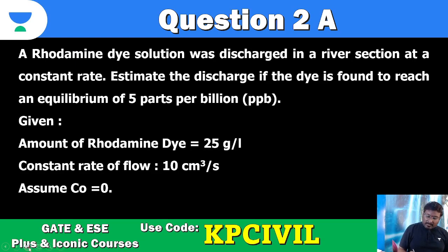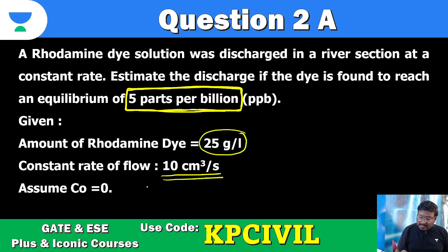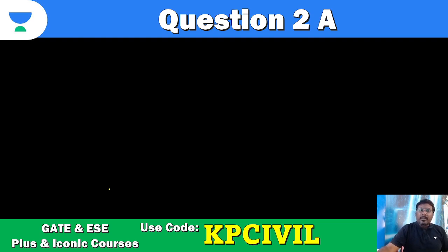Now coming to the question. A rhodamine dye solution is discharged in a river at a constant rate. Estimate the discharge if the dye is found to reach an equilibrium of 5 ppb. Amount of rhodamine dye 25 gram per liter, constant flow rate 10 cc per second. Assume C naught equals 0. So we know stream gauging or river gauging concept - dilution method of flow rate estimation.